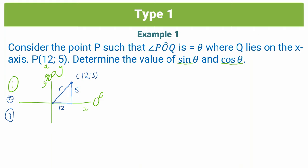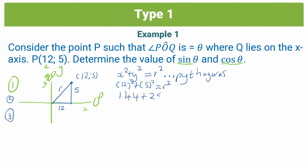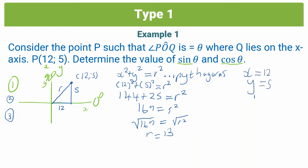We'll use Pythagoras: x² + y² = r². Now we substitute our variables in — x is 12 and y is 5. So 144 + 25 = r², giving us 169 = r². We aren't looking for r squared, we're looking for r, so we square root both sides. r comes out to be 13. So we have x = 12, y = 5, and r = 13.